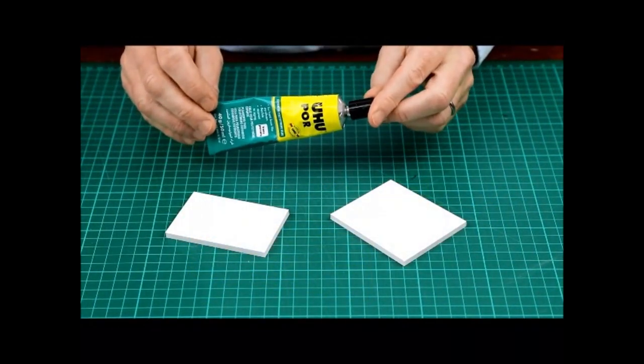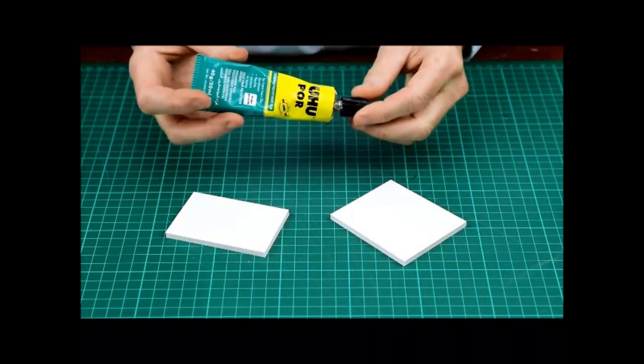UHU is best used as a contact adhesive. This will give you a strong bond and allow you to build more quickly.